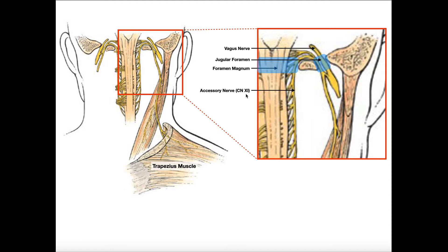This is cranial nerve number 11. The spinal accessory nerve is a motor nerve — it's purely motor in function, and it really just innervates two muscles. One of them is the trapezius muscle, and then this one right here, which is actually running up to the mastoid process — this is the sternocleidomastoid. So those are the two muscles innervated by the spinal accessory nerve.